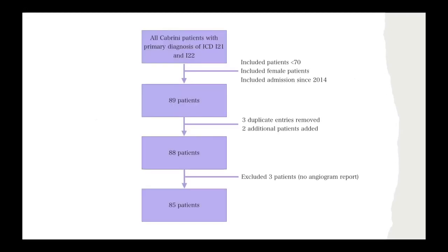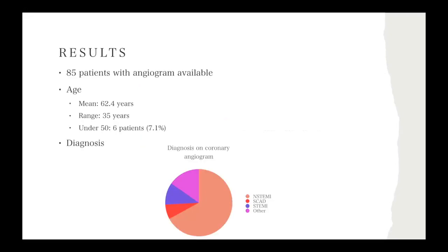Using ICD codes I21 and I22 to find AMI patients and applying inclusion/exclusion criteria, we ended up with 85 patients in our study population. The mean age was 62.4 years and six patients were aged under 50, making up 7.1 percent of the study population. Of the diagnoses: the majority had NSTEMI at 67.1 percent, 10.6 percent had STEMI, 7.1 percent had SCAD, and 15.3 percent had other diagnoses.